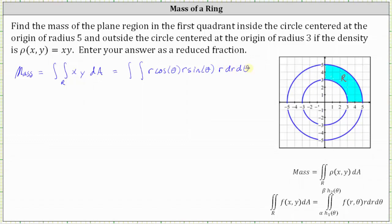Looking at the region R, the limits of integration for r are going to be from three to five, between the two radii of the circles. The angle theta is going to be from zero radians to pi over two radians. Let's go ahead and clean up the integrand function as r cubed cosine theta sine theta.